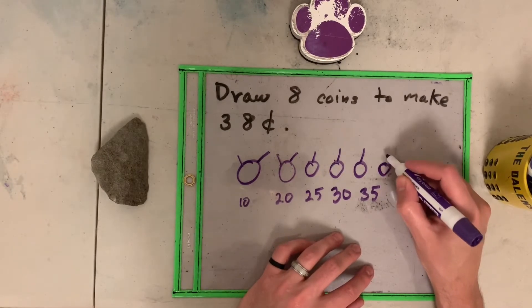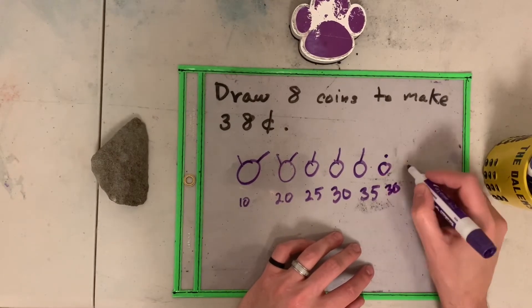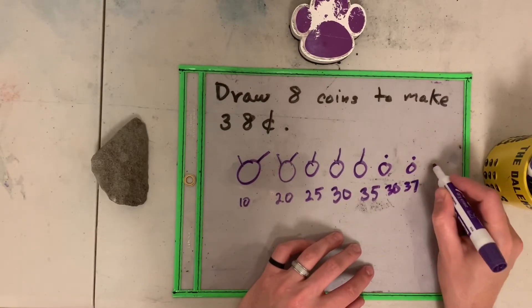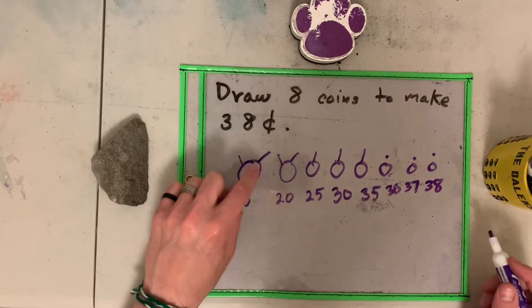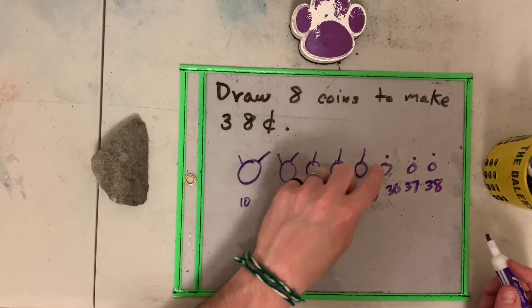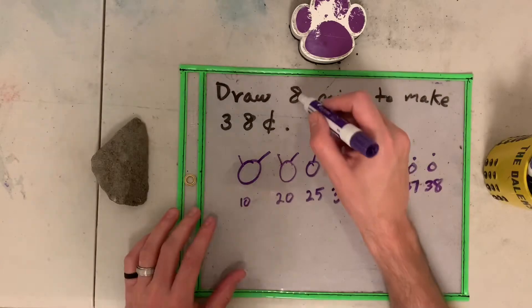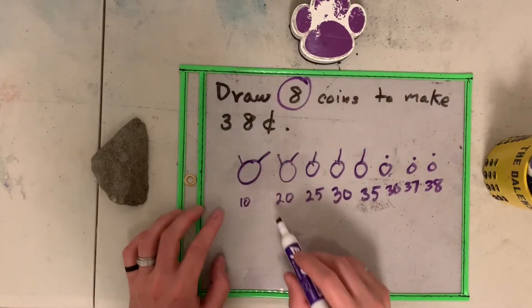You have one penny. This is thirty-six. Another penny. Thirty-seven. And another penny. Thirty-eight. And let's see. We have one, two, three, four, five, six, seven, eight. I have the eight coins.